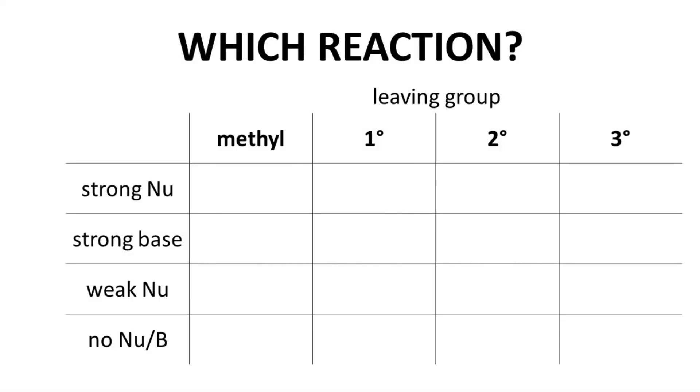I always start these videos with a very quick review of the main ideas of the topic. We're trying to predict products and assign a reaction type: SN2, SN1, E2, or E1. To review this task, let's fill in this table and see how different leaving groups – methyl, primary, secondary, and tertiary – behave in these reactions.